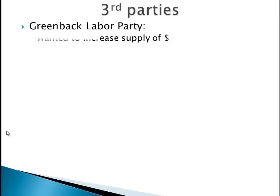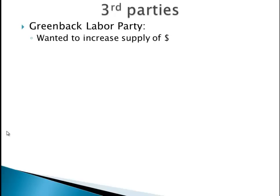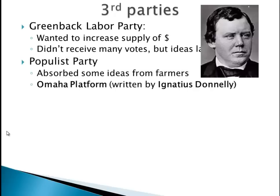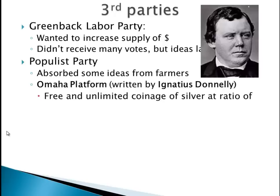Third parties: we have the Greenback Labor Party. What did they want? They wanted Greenbacks in circulation — increase the supply of money. They didn't receive many votes, but their ideas were later absorbed. Then the Populist Party — look at this guy, Ignatius Donnelly. For the Populist Party, he wrote the Omaha Platform, a series of things that they ran on.